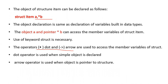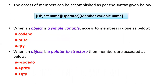The dot operator is used when accessing through a simple object, and the arrow operator is used when accessing through a pointer. The syntax is: object name, operator, member variable name. If it is a simple variable, use dot; if it is a pointer, use the arrow operator.